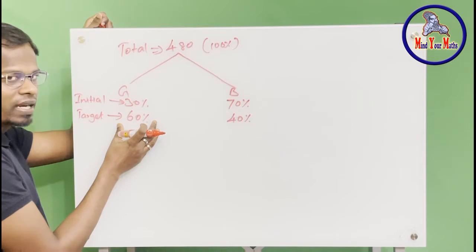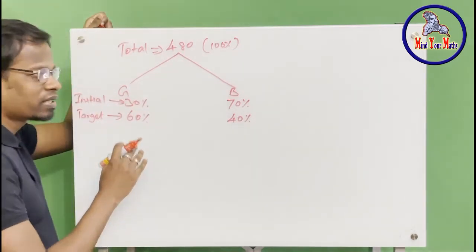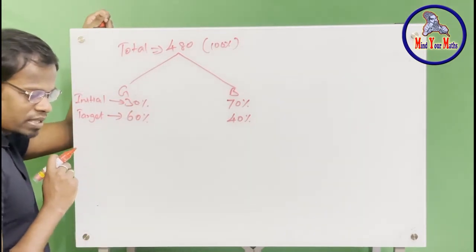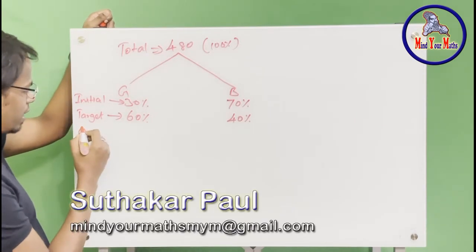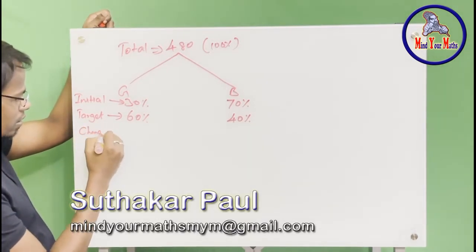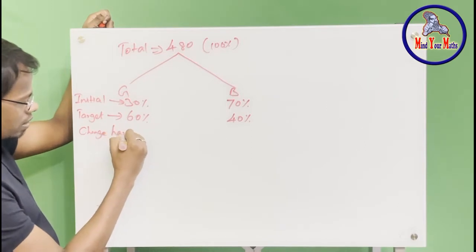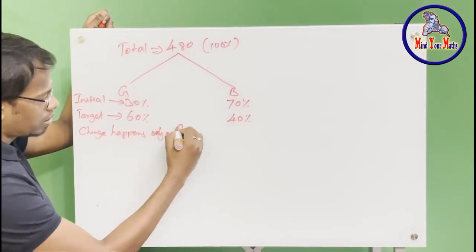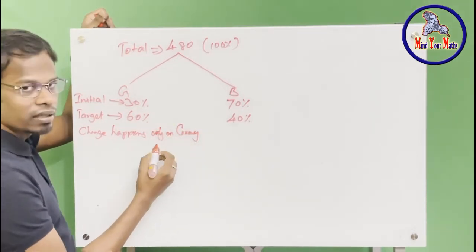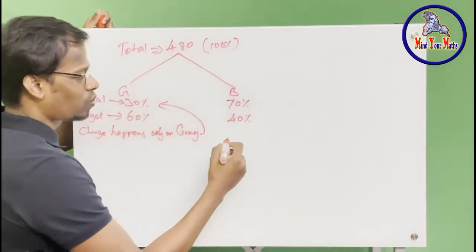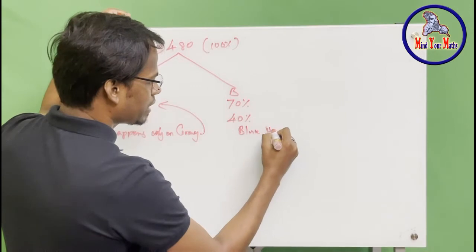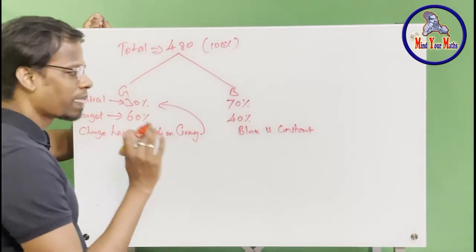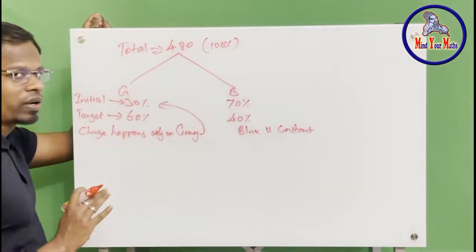Got it? So as we solve, you will understand this problem better and you can apply the same procedure in your next problem. The change happens only on gray beads. What it means is that blue is constant — the number of blue beads are going to be constant.